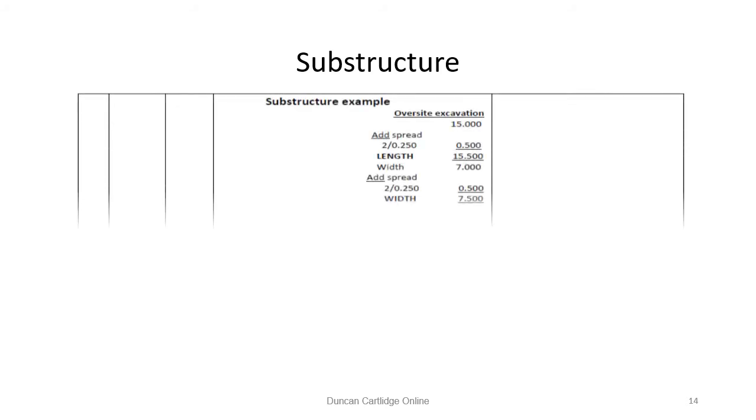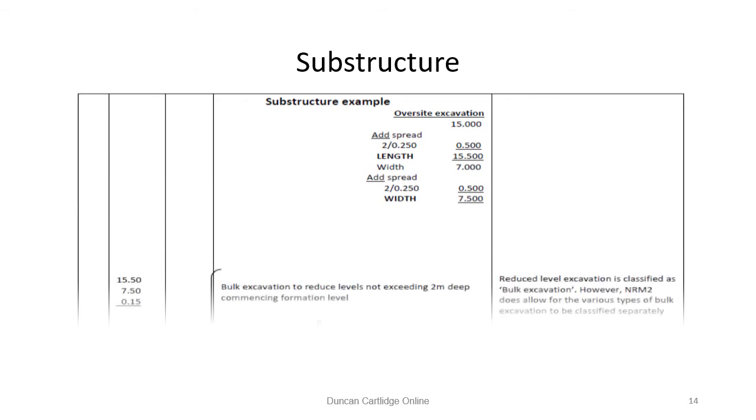So here we go with the worked example. In this case, we are using traditional setting out. In other presentations, spreadsheet applications will be used. It may be a good idea to print off the drawing on page 11. To the external dimensions of the walls, we add twice times 250mm to give the overall area of the excavation: 15.5 by 7.5. The reduced level excavation is 150mm deep.